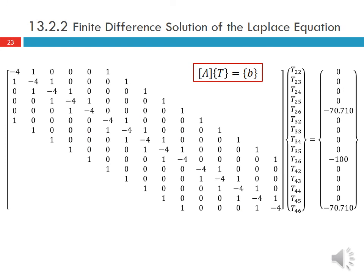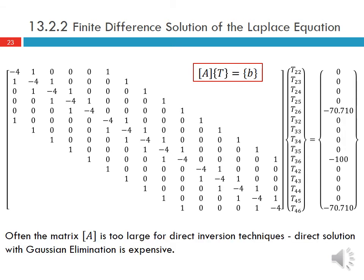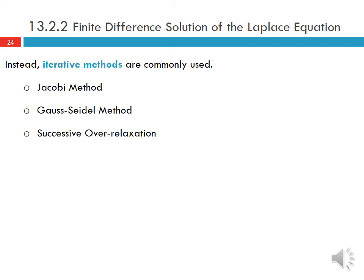When we get this matrix equation, we have to solve it somehow. Typically the matrix is too large for direct inversion techniques. For a small 5x7 grid it's easy, but for a larger domain with many grid points, the matrix becomes too computationally expensive for Gaussian elimination or direct methods. Instead, iterative methods are commonly used — that's why elliptic problems are typically solved with relaxation methods such as the Jacobi method or the Gauss-Seidel method. Relaxation is often used to speed up convergence. When the matrix equations get large, these iterative methods are more efficient than direct solution methods.